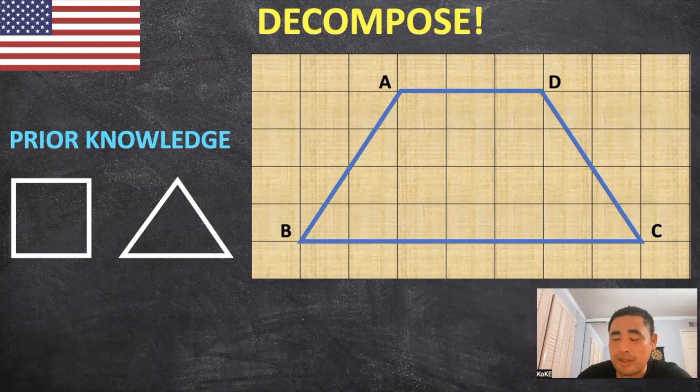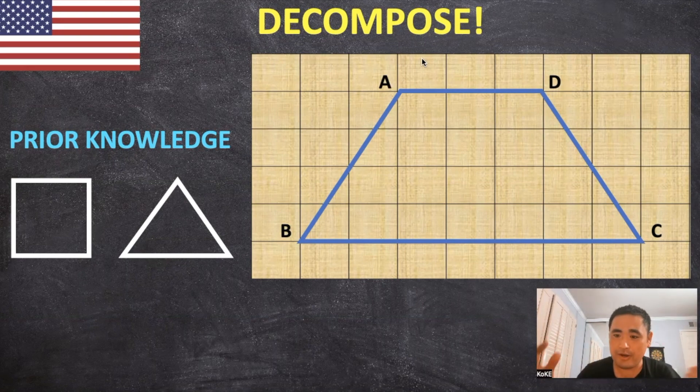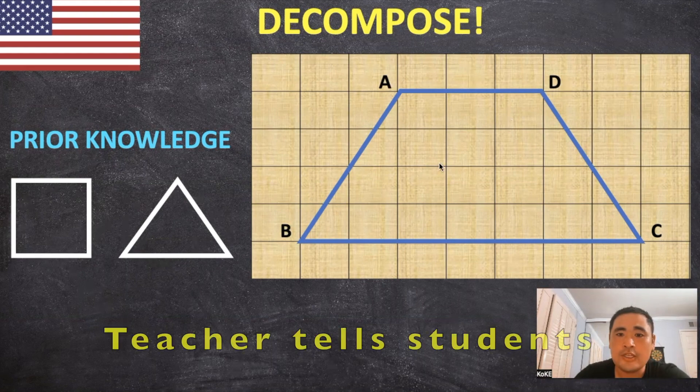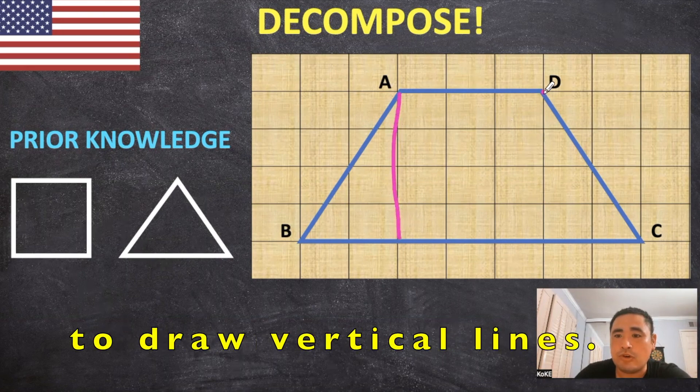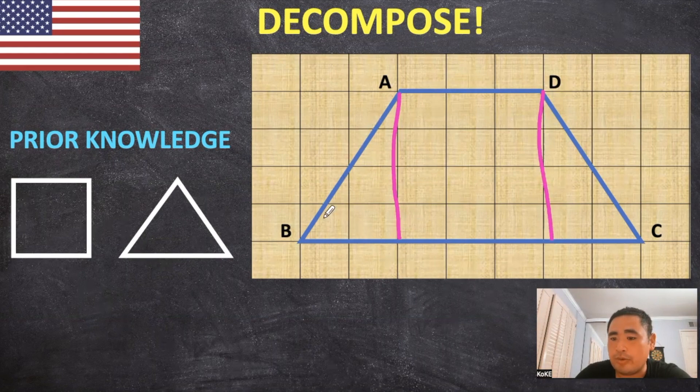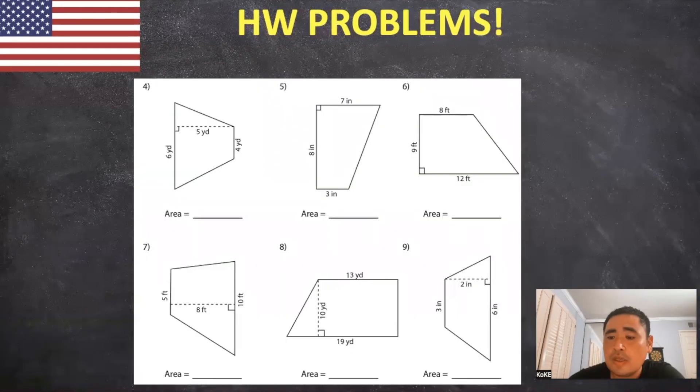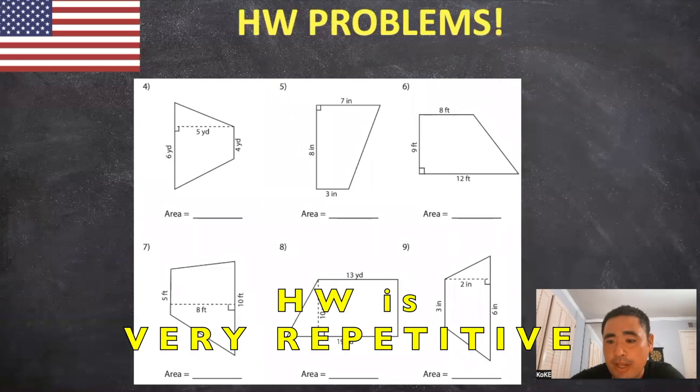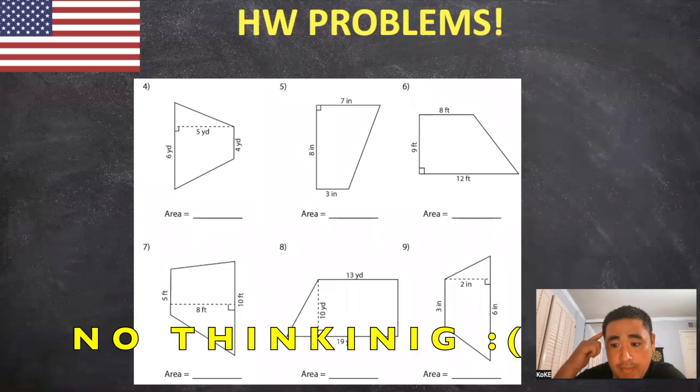So in America, before we apply the actual formula for the area of a trapezoid, we use the word decomposing, which means breaking apart. So in this case, the student's prior knowledge is of squares and triangles. So the teacher will go through with them and teach them to draw vertical lines to break up the trapezoid into triangles and squares. The approach isn't bad at all, except the homework problems are very repetitive and there's no thinking behind them.